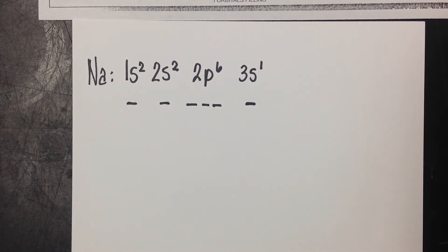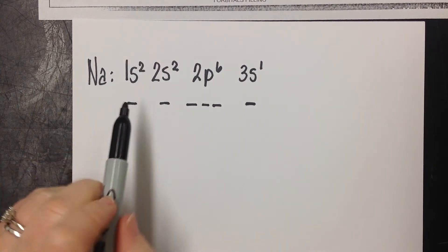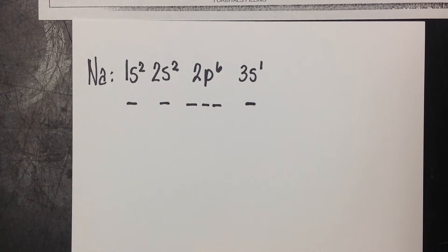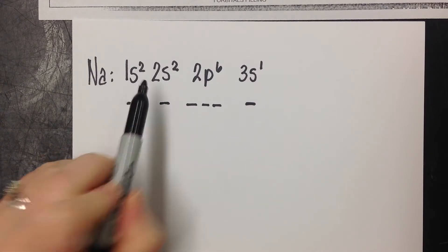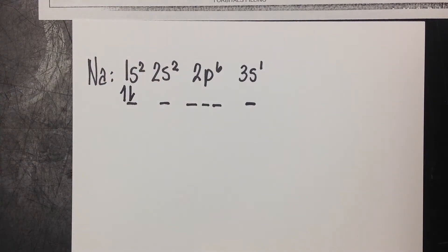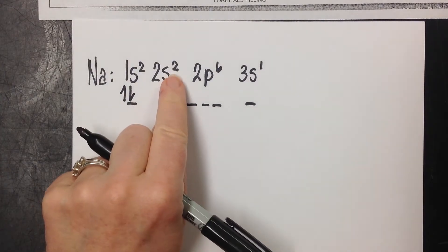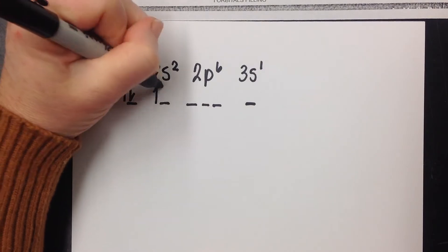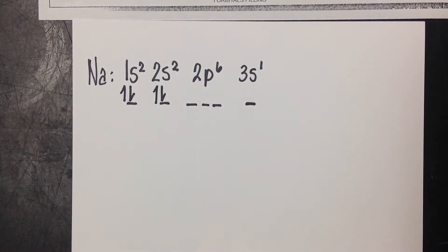So each arrow represents an electron. So we're just going to start filling these electrons in the blank. So you can see this first orbital has a total of two electrons. So we're going to say one, two. An up arrow and a down arrow. This orbital has two electrons. One, two.